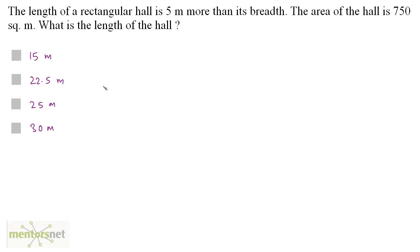The length of the rectangular hall is 5 meters more than its breadth. If the area of the hall is 750 square meters, what is the length of the hall? The length is 5 meters more than its breadth, so L equals B plus 5, or in other words, B equals L minus 5.